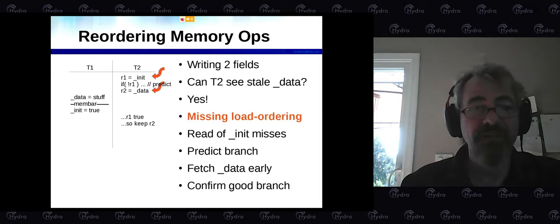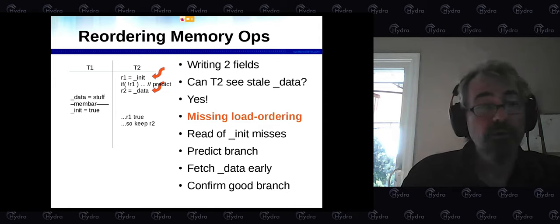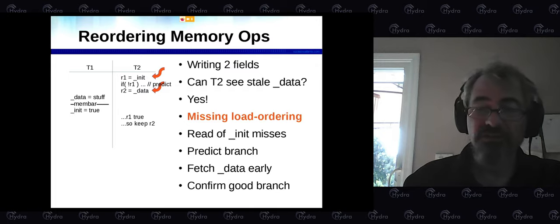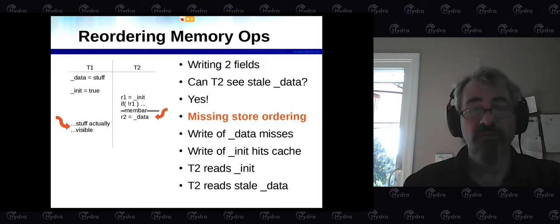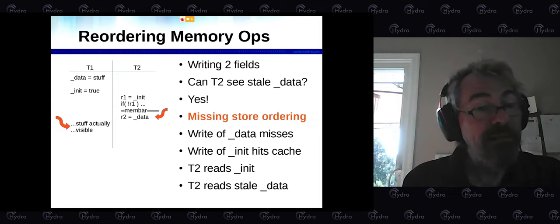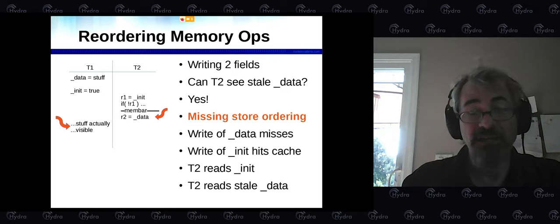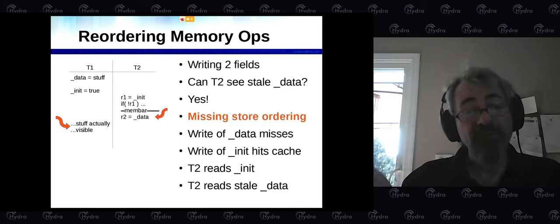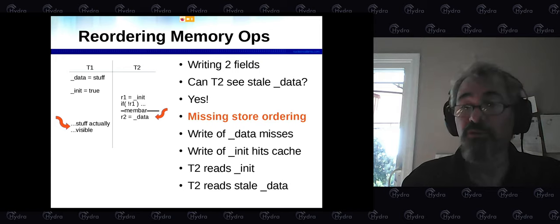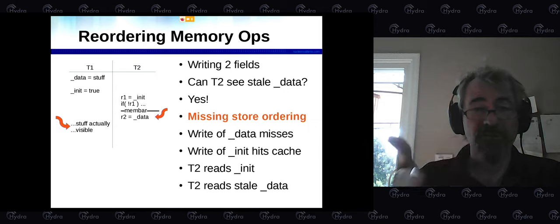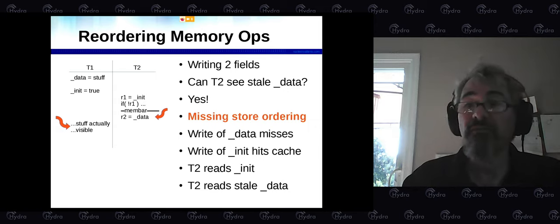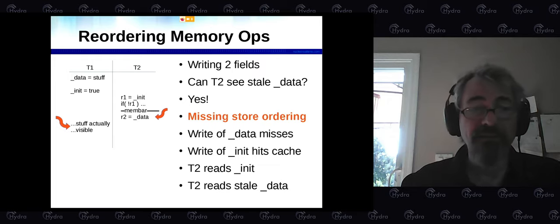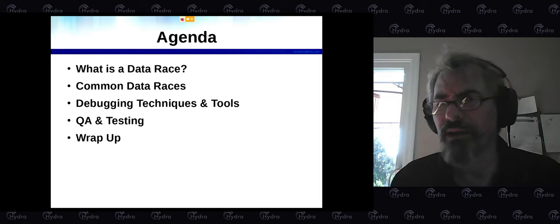You need a barrier on both the load side and the store side. On the load side, if you're missing load ordering, the init gets moved by the hardware past the load of data — data happens too early, init comes in late, the prediction is true but the data is stale: dead. Similarly, missing store ordering means data is written but it's in the processor's cache and doesn't hit main memory for a while. The init flag might be fast and in a shared L2, so the write gets seen immediately by thread two who reads stale data. The moral: you must have ordering on both threads — both read side and write side.